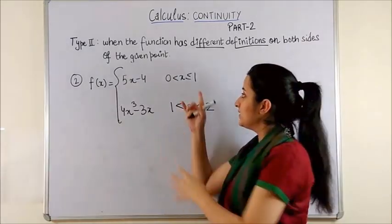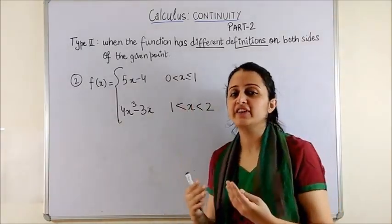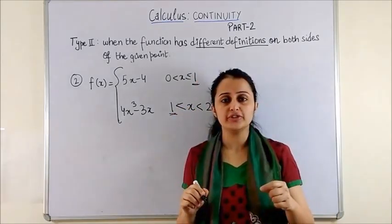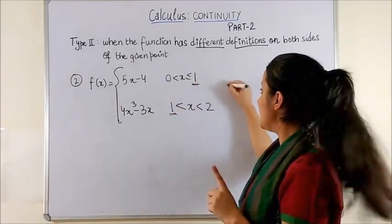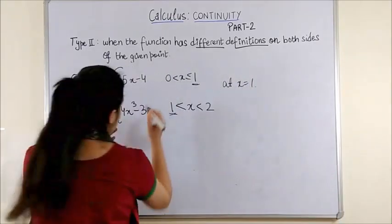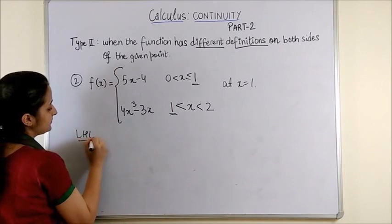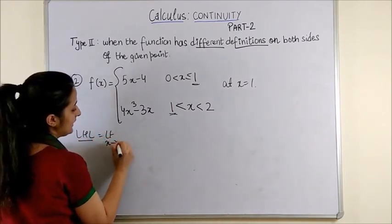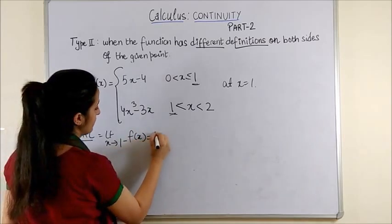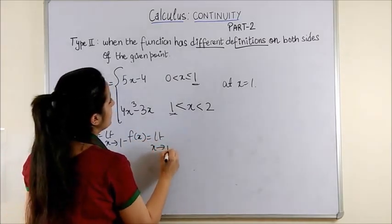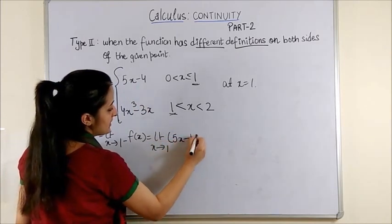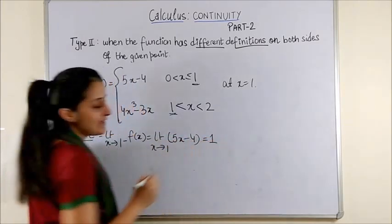So, once again, your function is differently defined at 1 and you have to check the continuity of the function at x equal to 1. So, to begin with, once again, your LHL, that means moving to 1 from the left side, we get 5x minus 4. On substituting we get 1 as the answer.